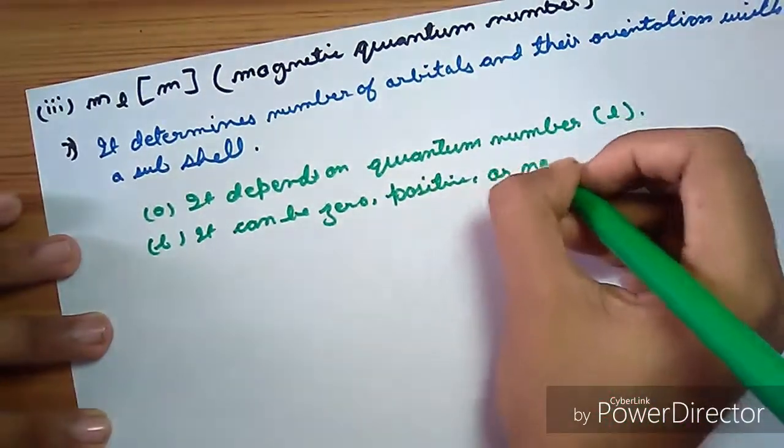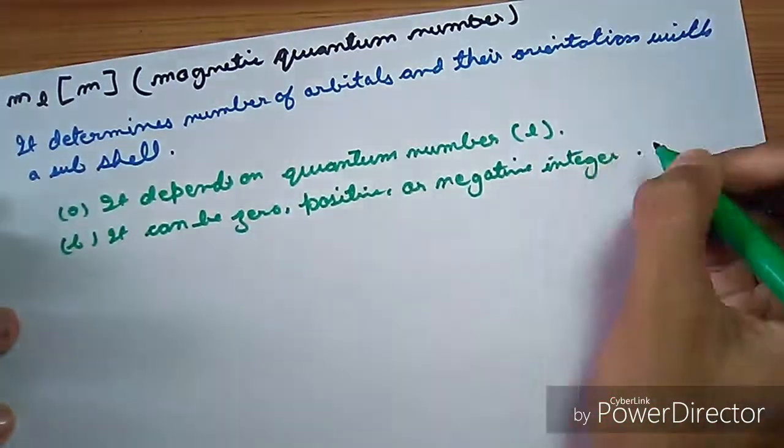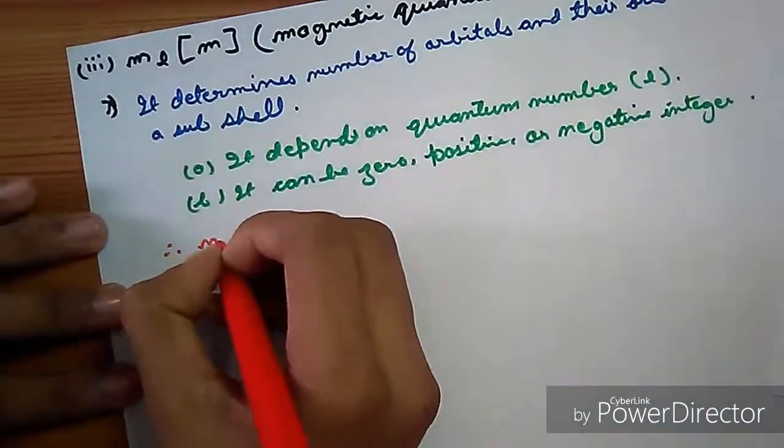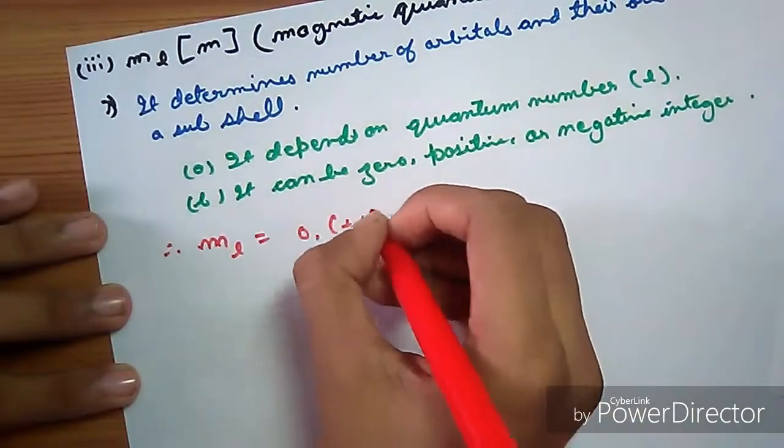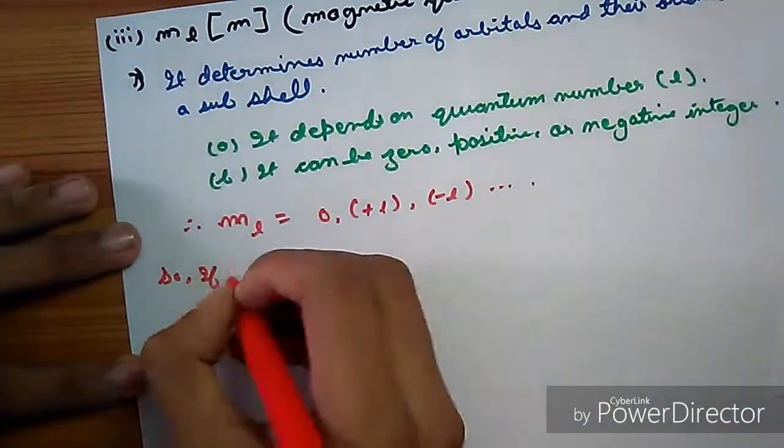It depends on quantum number L. It can be 0, positive or negative integer. For example, ML equals 0, plus L or minus L.